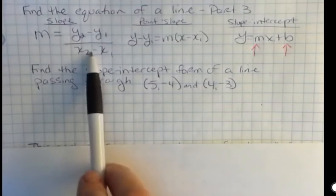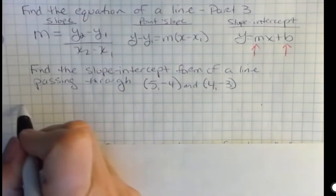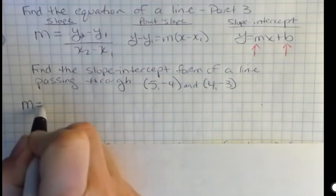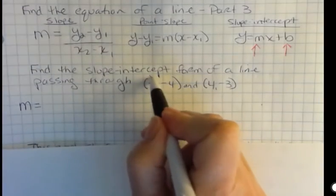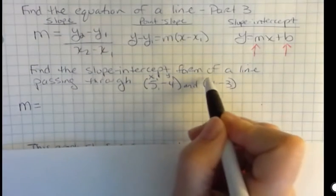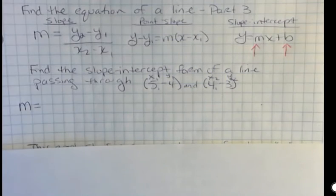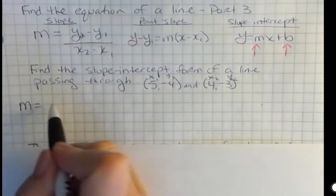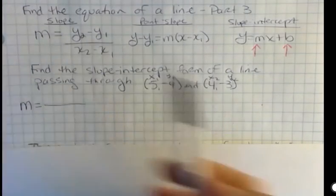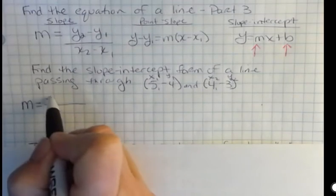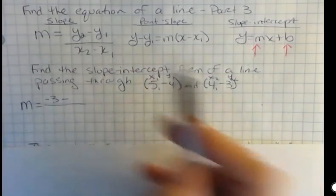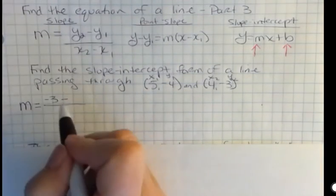So the first thing we do is we find the slope by using this formula. I'm going to call this one x sub 1 and y sub 1, and this x sub 2 and y sub 2. I could have named this the second point and this the first point, but I usually just go left to right. So my formula says take y sub 2, which is negative 3, and subtract y sub 1, which is negative 4. Notice I have a minus and a negative there.